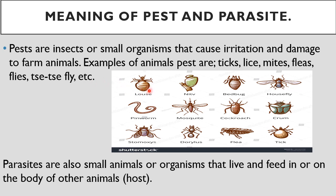Now you can take a good look at these pests. This is a louse — when there are many, we call them lice. This is gnats, this is a bed bug, this is a house fly, this is a crow, this is a tick — you can get it on the body of a dog. This is a flea, found on the body of a dog and other animals. Cockroaches, mosquitoes, gorillas, stomach worms, pinworms — all these are pests of animals. They keep the animals uncomfortable by causing irritations and damage to their body.